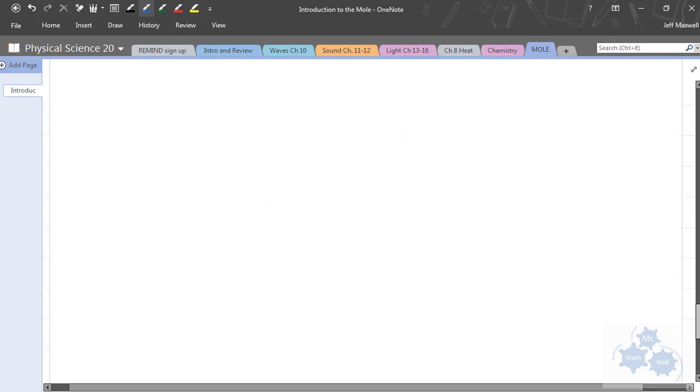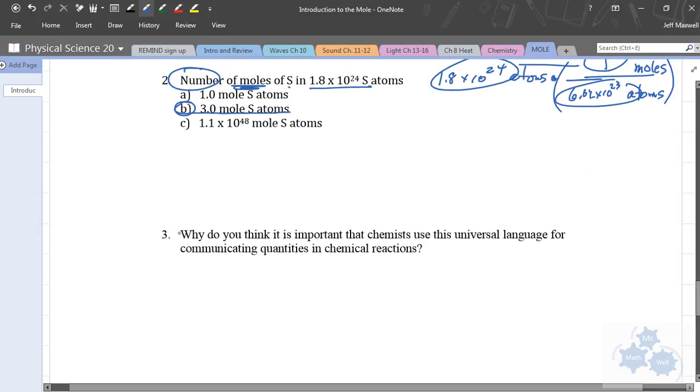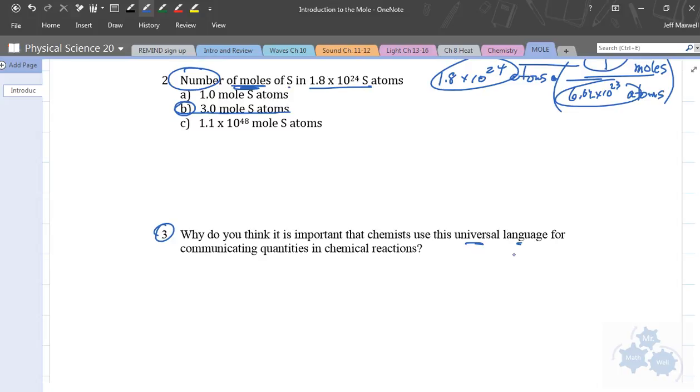Just with a partner right now, I want you to just talk about this question and this answer with someone nearby you. Why do you think it's important that chemists use this universal language for communicating quantities in chemical reactions? So, why do we need this unit? And why is this good to be used universally in the field? Why would we have this unit at all? And what good would it do? That's your lesson for today on the introduction to the mole.